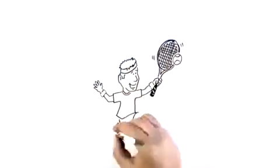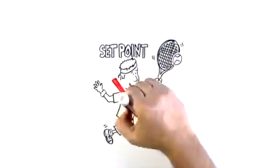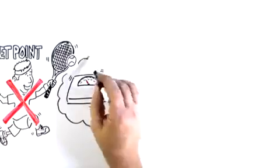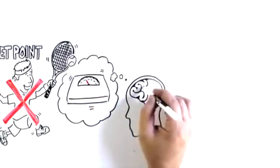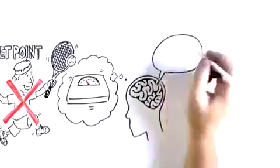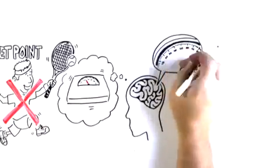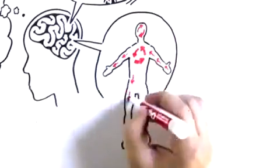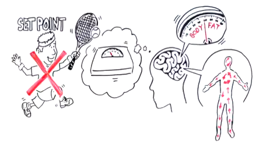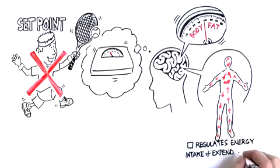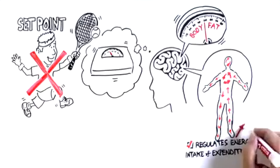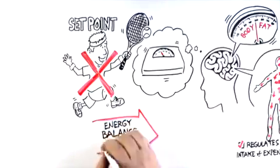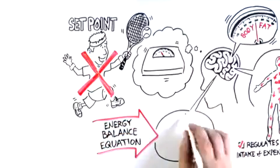First, let's talk about set point. No, I'm not talking about the point in a tennis match when one player is about to beat the other. I'm talking about a theory that says that no matter what you consciously want your weight to be, your brain has its own sense of how much body fat it should have on board, and it has a complex system in place that very precisely regulates your energy intake and expenditure to keep you within a so-called set point range for body fat. So that whole energy balance equation, it's not something that you control voluntarily.